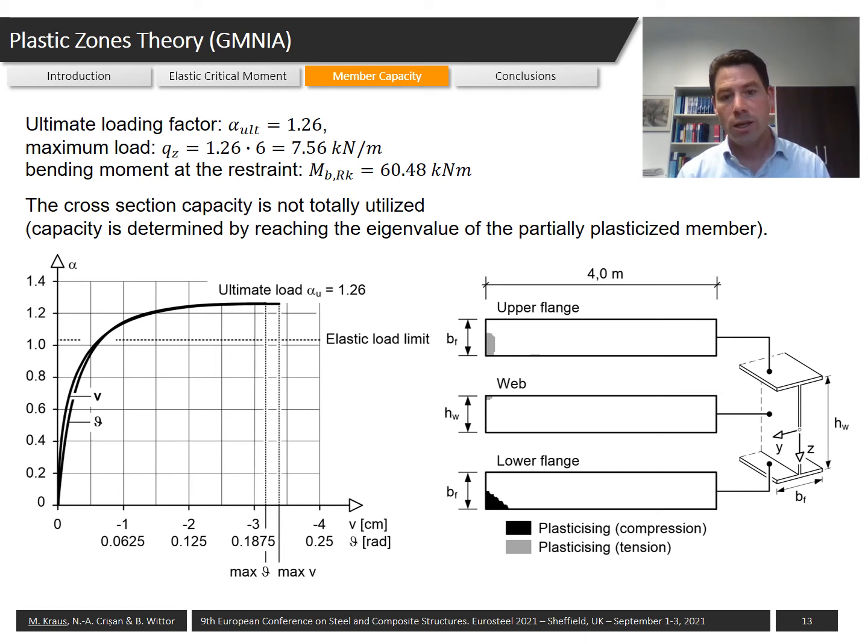When reaching the ultimate limit state, the cross section is not totally plasticizing. There are local plasticizations in the upper flange and in the lower flange as shown on the right figure and also certain plasticizations in the web. However, parts of the cross section are still in the elastic state.